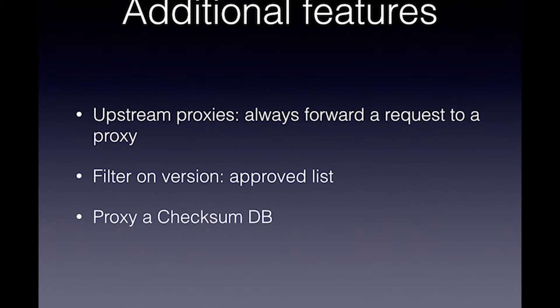You can also specify a checksum DB. You can now have databases of all the checksums of module versions stored somewhere online, so that when you do the initial download you can verify it's the correct one. One reason you'd use Athens is if you have a private GitLab running and want to cache those — you don't want to send information about those to some other upstream proxy. Athens lets you specify that for certain paths, do not go to the upstream proxy but check those locally, or if you run your own checksum DB use that one.